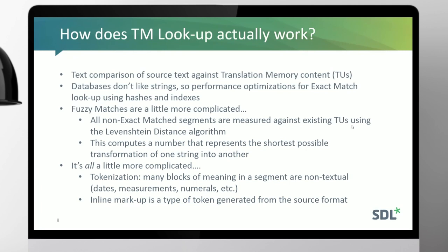Fuzzy matching gets a little bit more complicated. We can't use hashing because we know the strings are different — they won't exactly match, but they might be similar. There is a thing called edit distance, and a particular implementation called Levenshtein distance, named after a Russian computational scientist who came up with it. It computes a number representing the shortest possible transformation of one string to another.